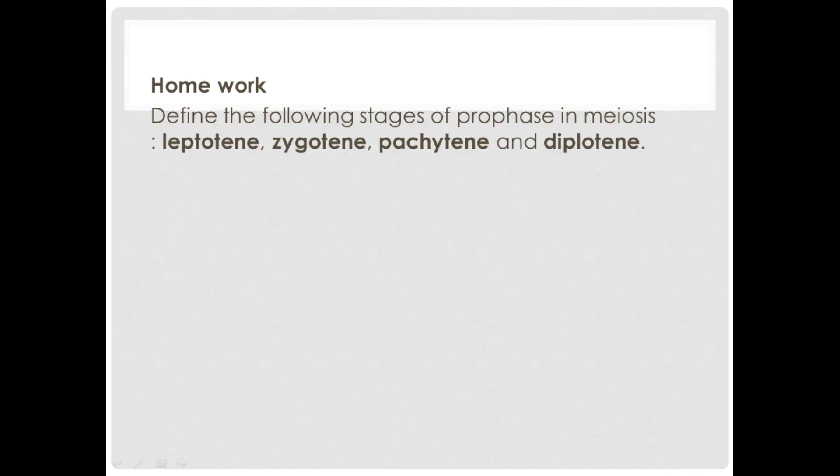Now for your homework, go and define the following stages of prophase in meiosis: leptotene, zygotene, pachytene, and diplotene.